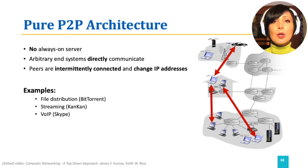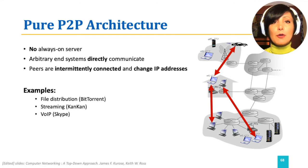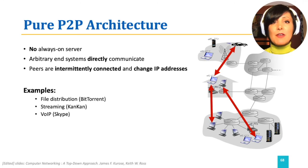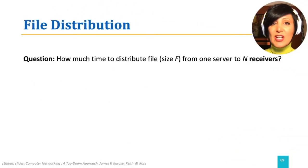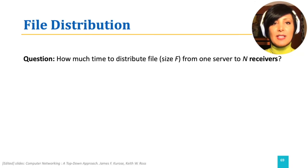Skype, which is a famous videoconference tool, BitTorrent for file distribution, and ConCon for streaming are examples of peer-to-peer network applications. To start our discussions, let's do a comparison analysis on file distribution in client-server and peer-to-peer architectures.